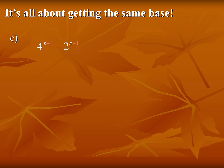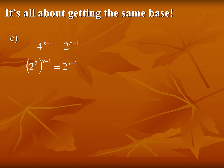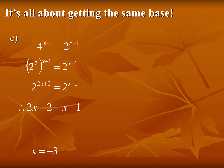You can do slightly more complicated examples as long as both sides can be put in the same base. This question looks like big trouble, but both bases can be expressed with base two. Four can be written as 2². Then distribute that exponent: 2 times x and 2 times 1 gives 2x + 2. Same base on both sides — just set exponents equal and solve the simple algebra.